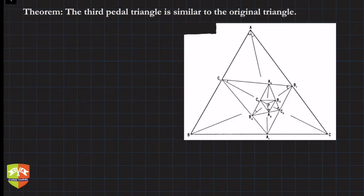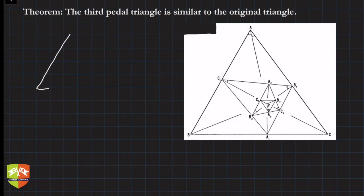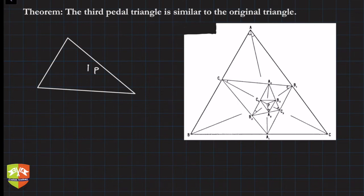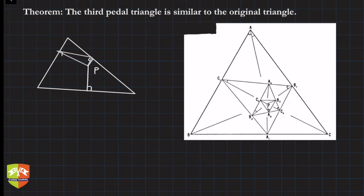Before we get on to the proof, we would like to discuss something about pedal triangles — just a recap. Most of you already know what a pedal triangle is, but for a quick recap: a pedal triangle is formed when we have a triangle and a point P within the triangle, and we drop perpendiculars on the three sides.